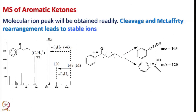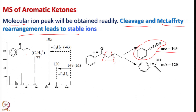Now let us look into the mass spectra of aromatic ketones. The molecular ion peak will be obtained readily, and alpha cleavage and McLafferty rearrangement lead to stable ions, provided we have a longer carbon chain on the carbonyl group. For the example considered here, cleavage can happen at two sites, giving m/z 105 or m/z 120. The molecular weight is 148; loss of ethylene gives 120 and loss of the C3H7 radical gives 105. These are the most common fragmentations in aromatic ketones.